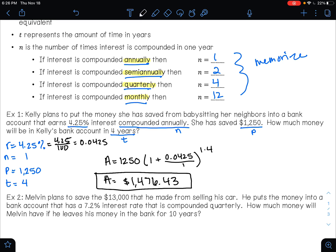So think about what this means for a second. Again, Kelly started out with $1,250. She put it into the bank and didn't touch it for four years. Four years later, she now has $1,476.43. So the money that she gained was all interest. And that is what the bank does when you leave your money with the bank. They say, thank you for leaving your money with us. Here's some free money.